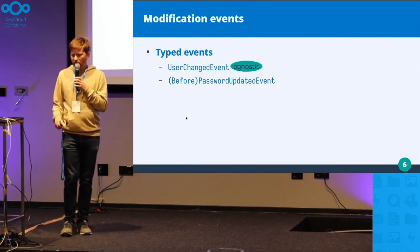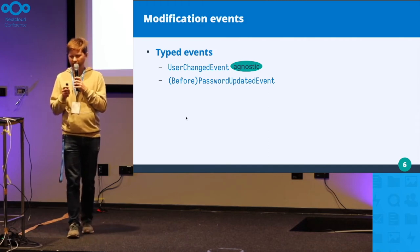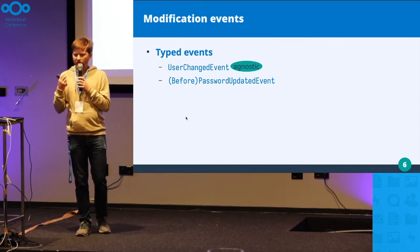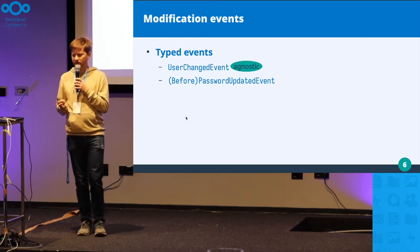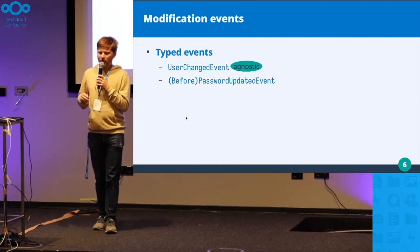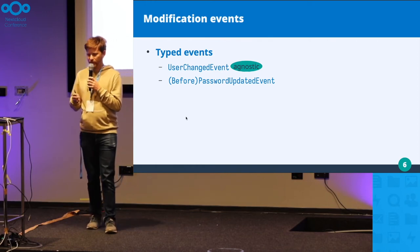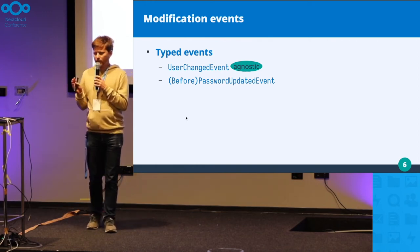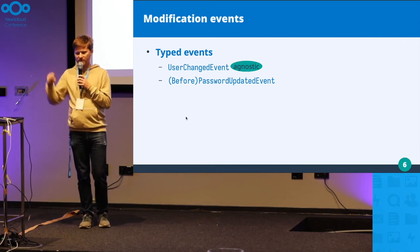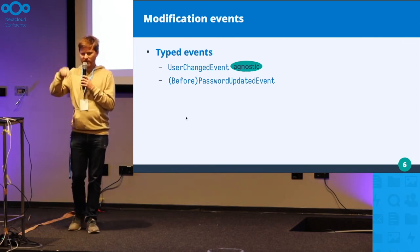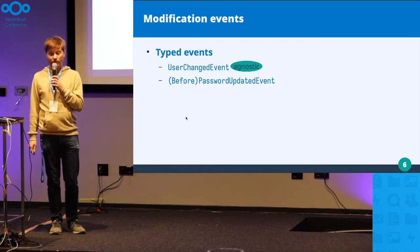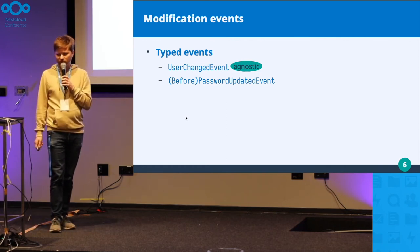Modification events are emitted for five types: when the display name changes, the email address changes, the avatar, the quota of a user, and the enabled state. This is basically backend-agnostic as it goes via the user component from core. It's a bit tricky for backends that write to remote systems, as you could run into a circular update. There are tricks for backends to announce this properly, but if you just want to listen and react, it doesn't need to concern you too much.